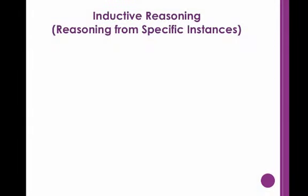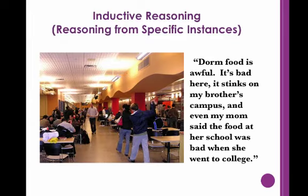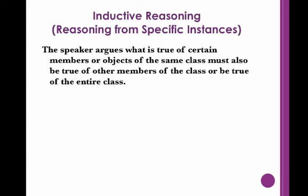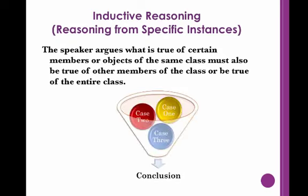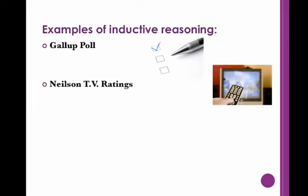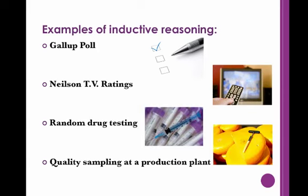The second major type of reasoning is inductive reasoning, which is also known as reasoning from specific instances. If your friend claims dorm food is awful — it's bad here, it stinks on my brother's campus, even my mom said the food at her school was bad when she went to college — he is reasoning by induction. With this form of reasoning, you argue what is true of certain members or objects of the same class must also be true of other members of the class or the entire class. When you are using inductive reasoning, you build from a collection of specific cases or observations to a final conclusion. This type of reasoning can be seen in instances when a population is sampled, as in a Gallup poll, the Nielsen TV ratings, random drug testing, and quality sampling at a production plant. When you use this form of reasoning, you are making a generalization based on specific types of evidence, like from a sample of a product.